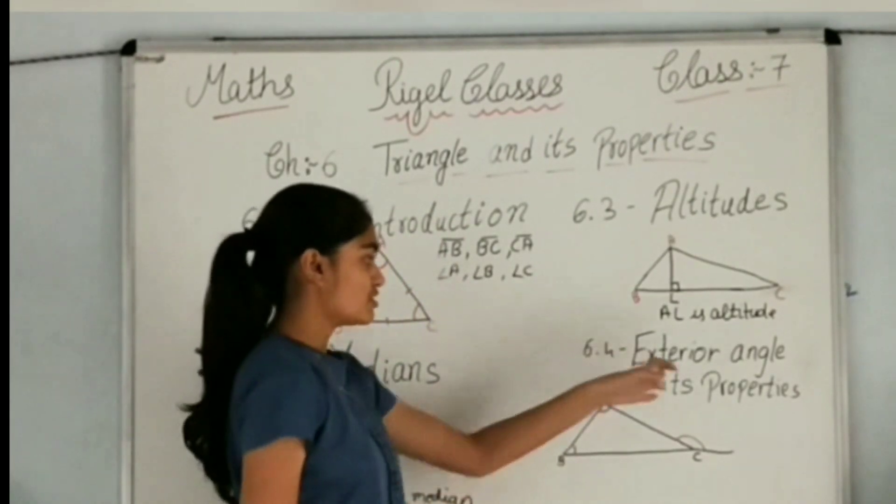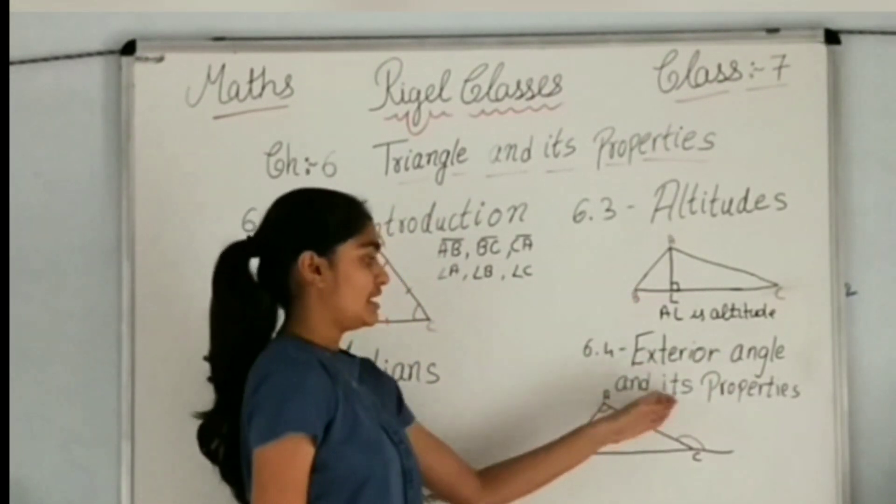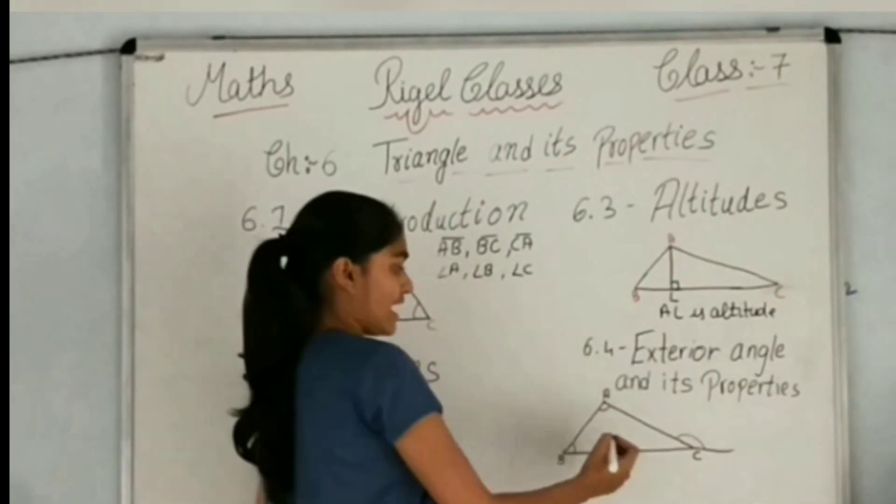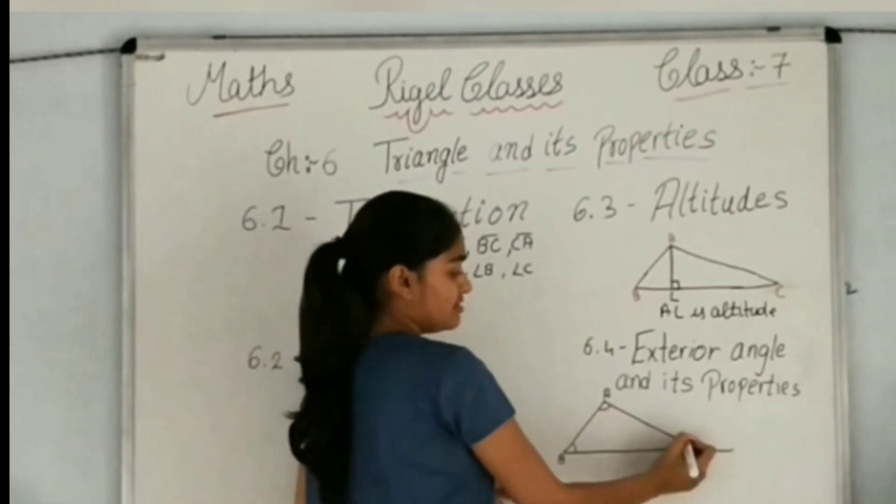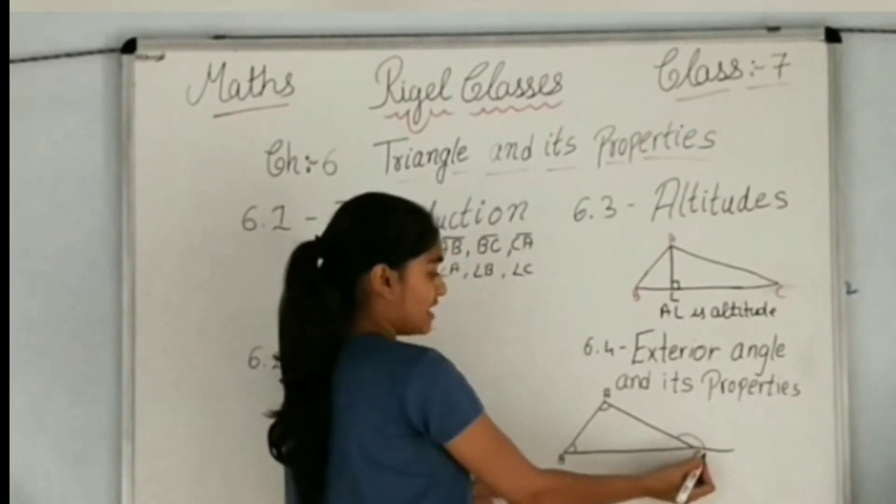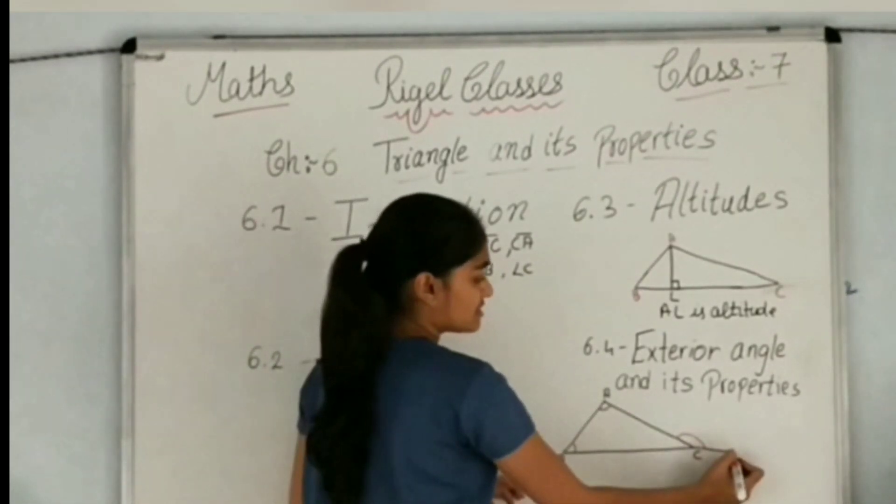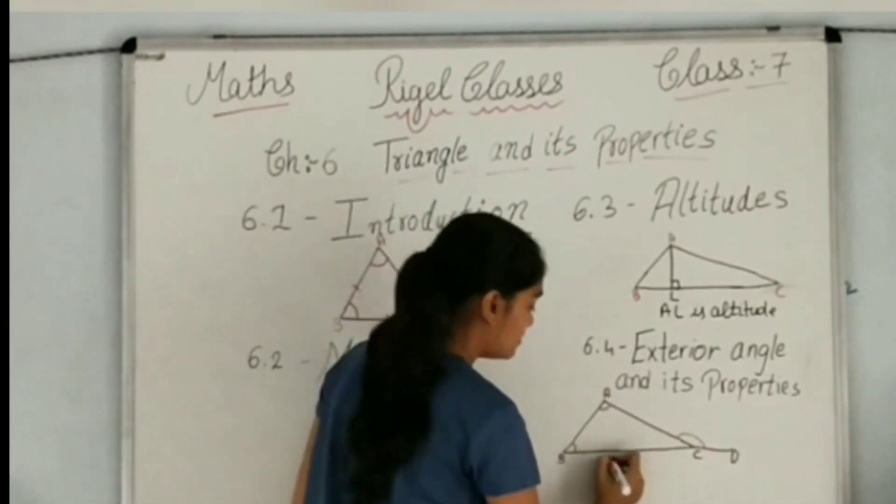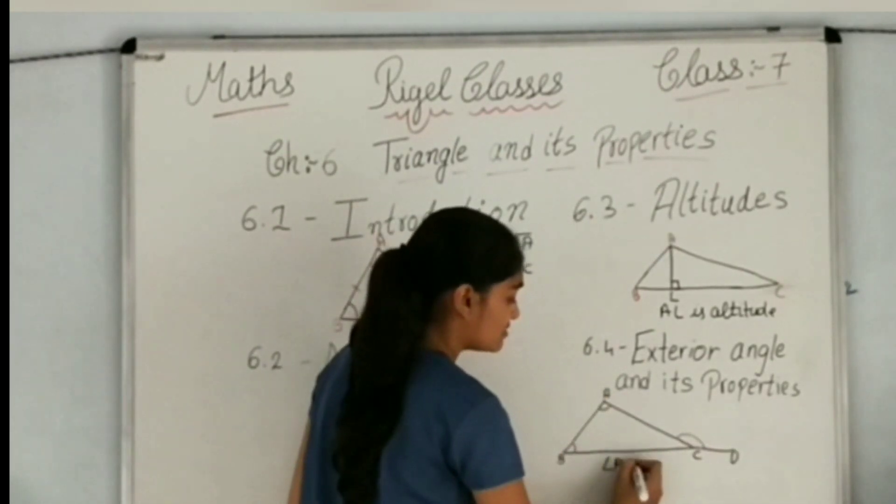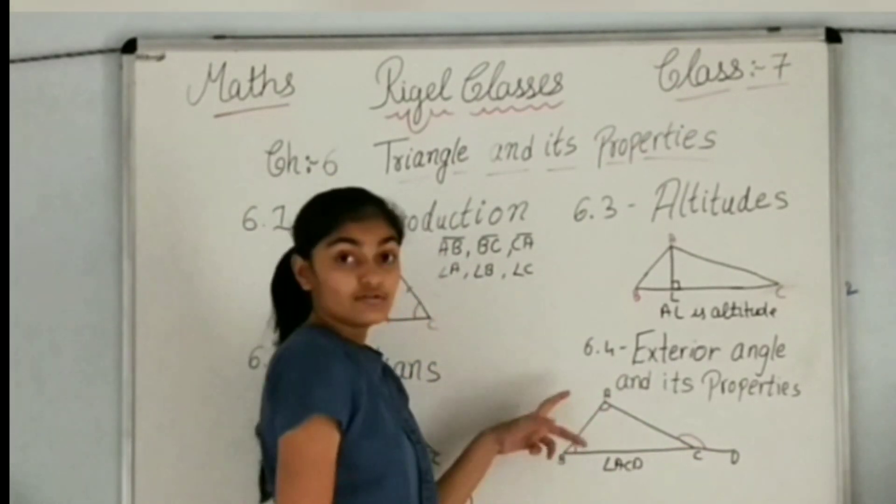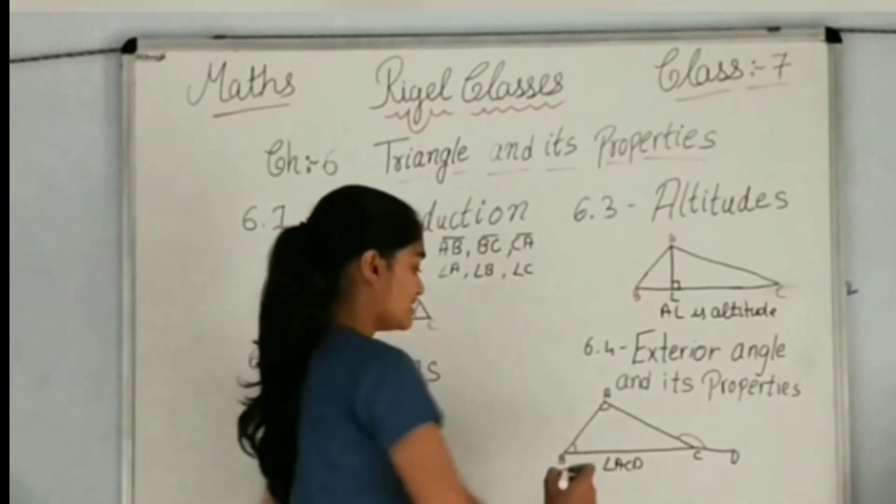Then we will see the fourth topic, that is exterior angle and its properties. First, we will see what is an exterior angle. The angle outside the triangle is known as an exterior angle. Here at point C, let us give the name D. So angle ACD is an exterior angle.